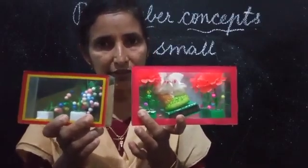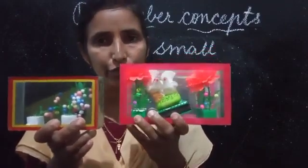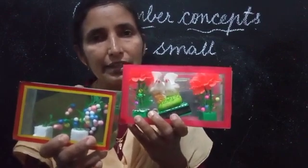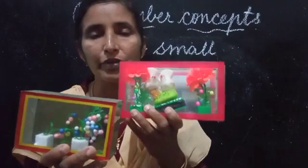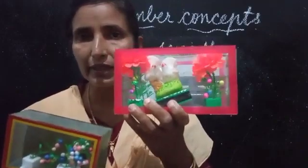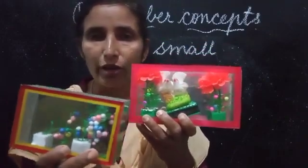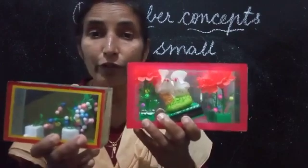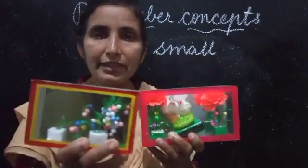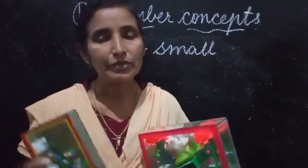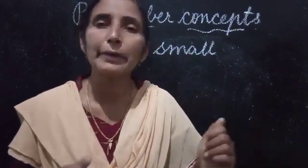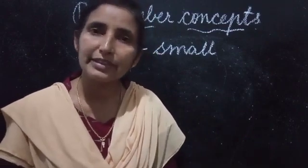When we compare the size of these two objects, we can identify that this one is small in size when we compare with this one. So this is big and this is small. When we are comparing the size of these two objects, we are saying that this is big and this is small. We are using the words big and small to compare the size of two objects.